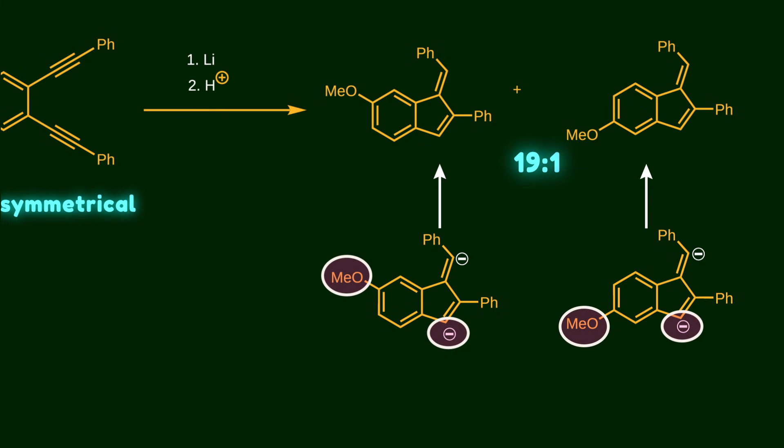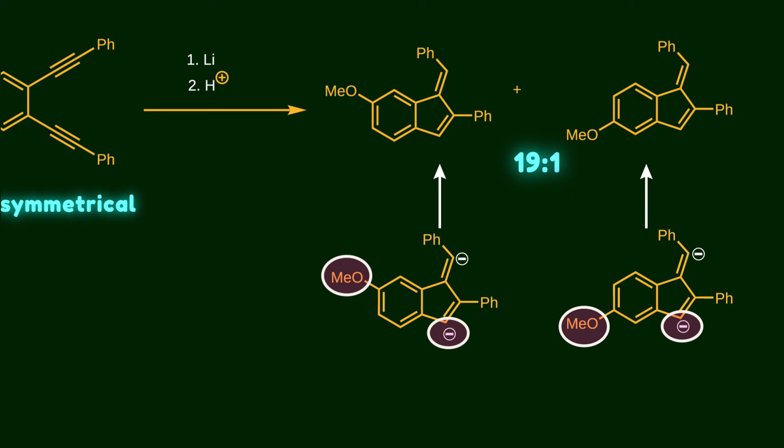If you consider the methoxy group as a donor group, you would predict that the parallel stabilized pathway should be less favored. But it's actually the major product. So here the methoxy group works as an acceptor.